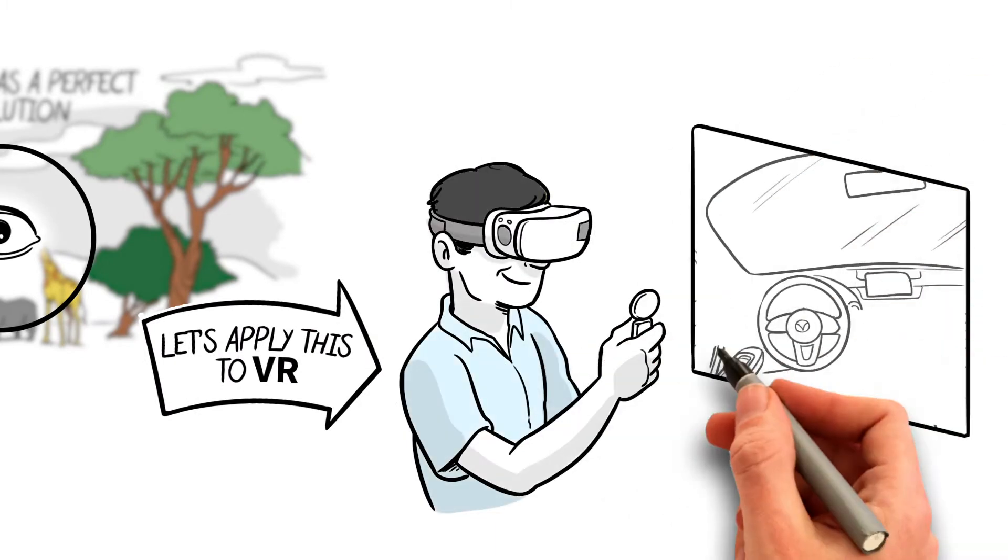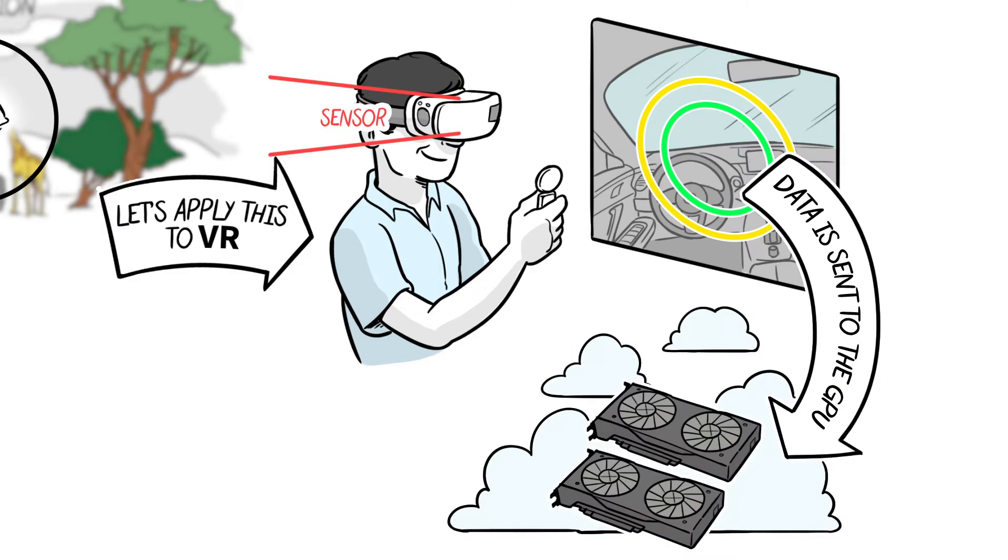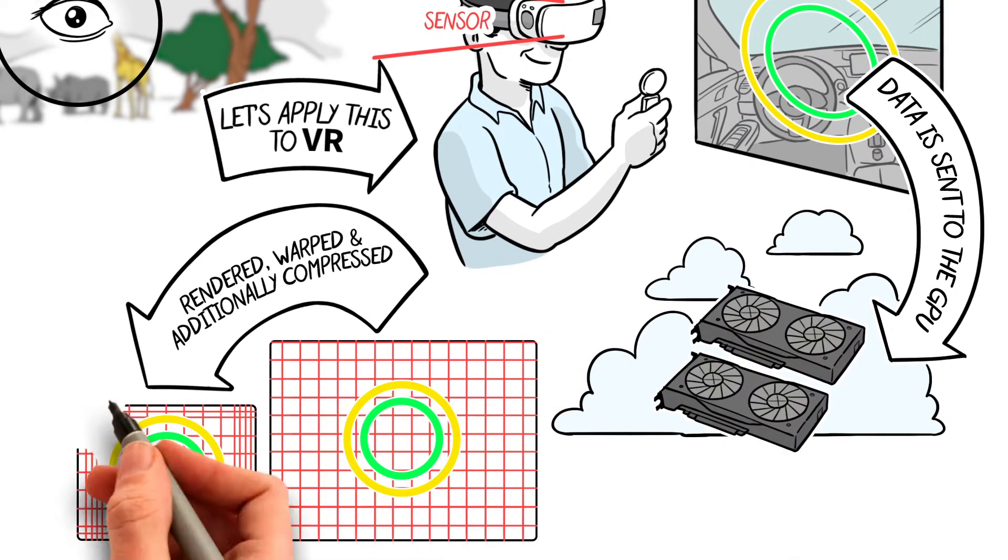Let's apply this to VR. Eye gaze is tracked by headset sensors. This fovea data is sent to the GPU, next rendered, warped, and additionally compressed.